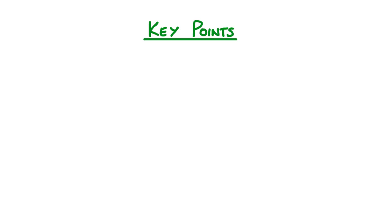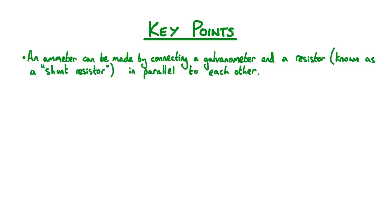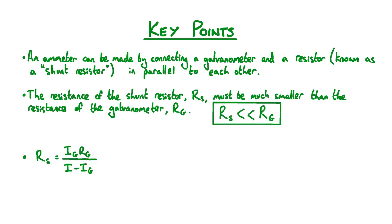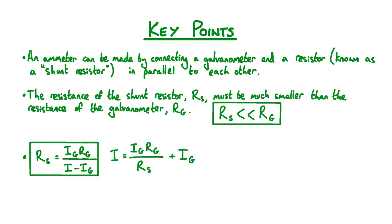Let's recap the key points from this lesson. An ammeter can be made by connecting a galvanometer and a shunt resistor in parallel. The resistance of the shunt resistor RS must be much smaller than the resistance of the galvanometer RG. If we have a galvanometer with maximum measurable current IG and resistance RG, then to construct an ammeter with range I, we need a shunt resistor with resistance Rs equals IgRg divided by (I minus Ig). We can also rearrange this expression to calculate the range of a given ammeter.